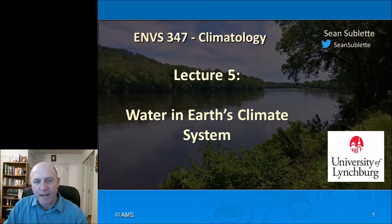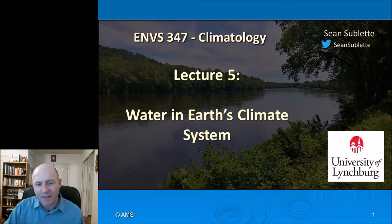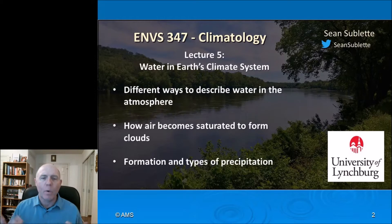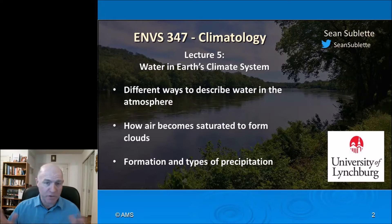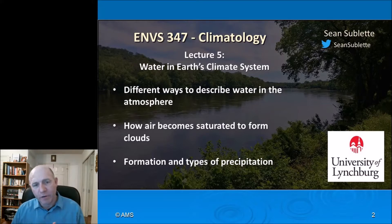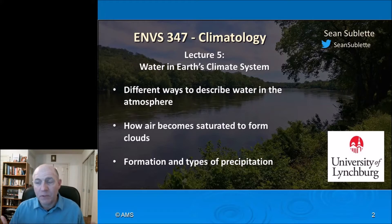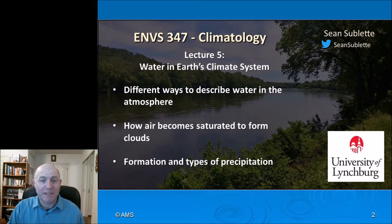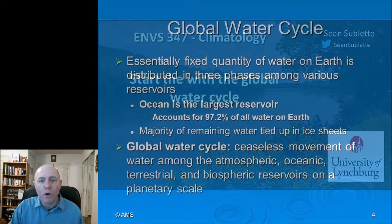Hello and welcome everybody to lecture five in Environmental Science 345 Climatology. This time we're going to be looking at the role of water in Earth's climate system. We'll start with different ways to describe water in the atmosphere, also known as humidity, then look at how air becomes saturated — saturated air is what we call clouds, basically liquid water droplets or ice crystals suspended in the air — and finally the formation and types of precipitation.